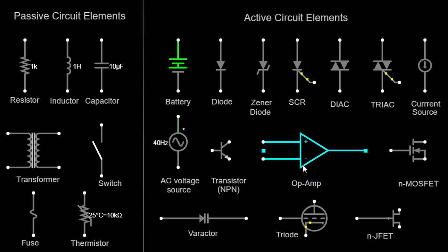An operational amplifier (op amp) is a high-gain voltage amplifier with differential inputs and a single output, widely used in signal processing and amplification circuits. Op amps are represented by a triangle with two input terminals and one output terminal. A NMOSFET (metal oxide semiconductor field effect transistor) is a type of field effect transistor where the majority charge carriers are electrons, widely used in digital and analog circuits. A varactor, also known as a varicap diode, is a type of diode that exhibits a variable capacitance depending on the applied voltage, used for tuning and frequency control. Varactors are represented similarly to regular diodes but with two curved lines on the cathode side.